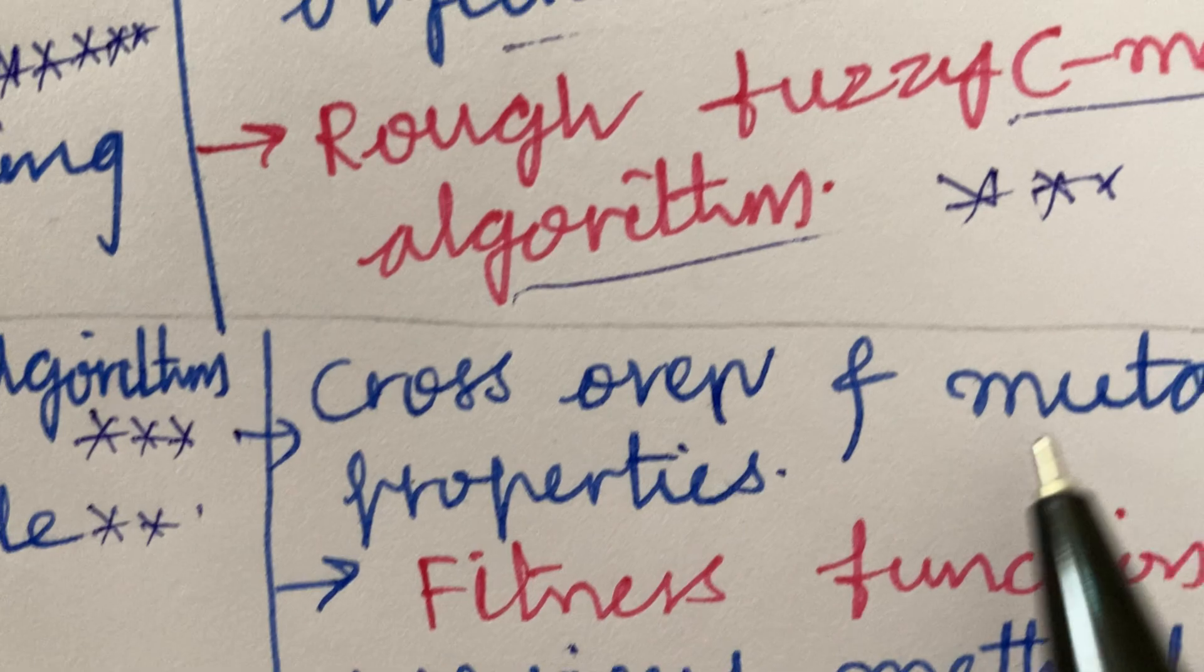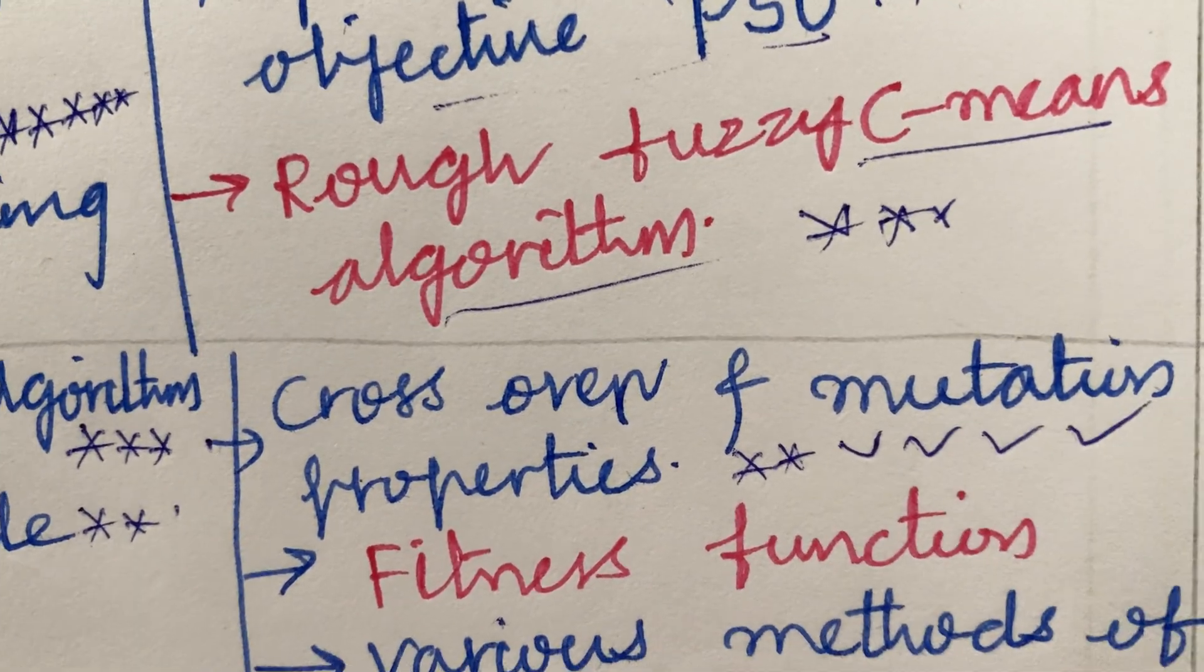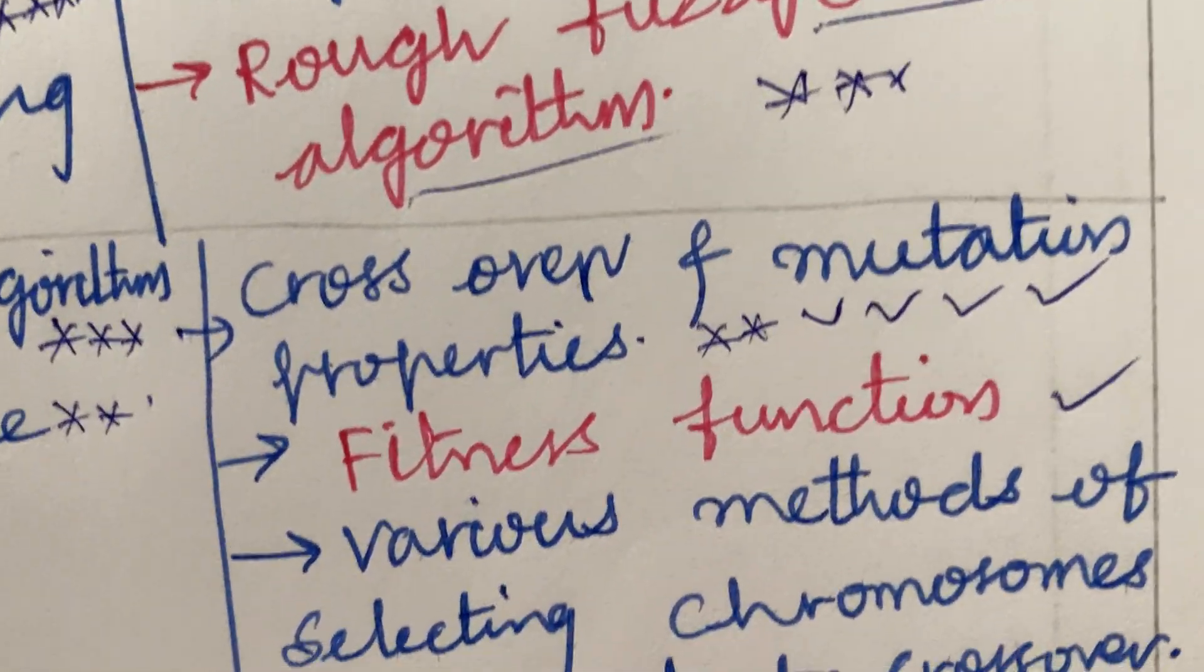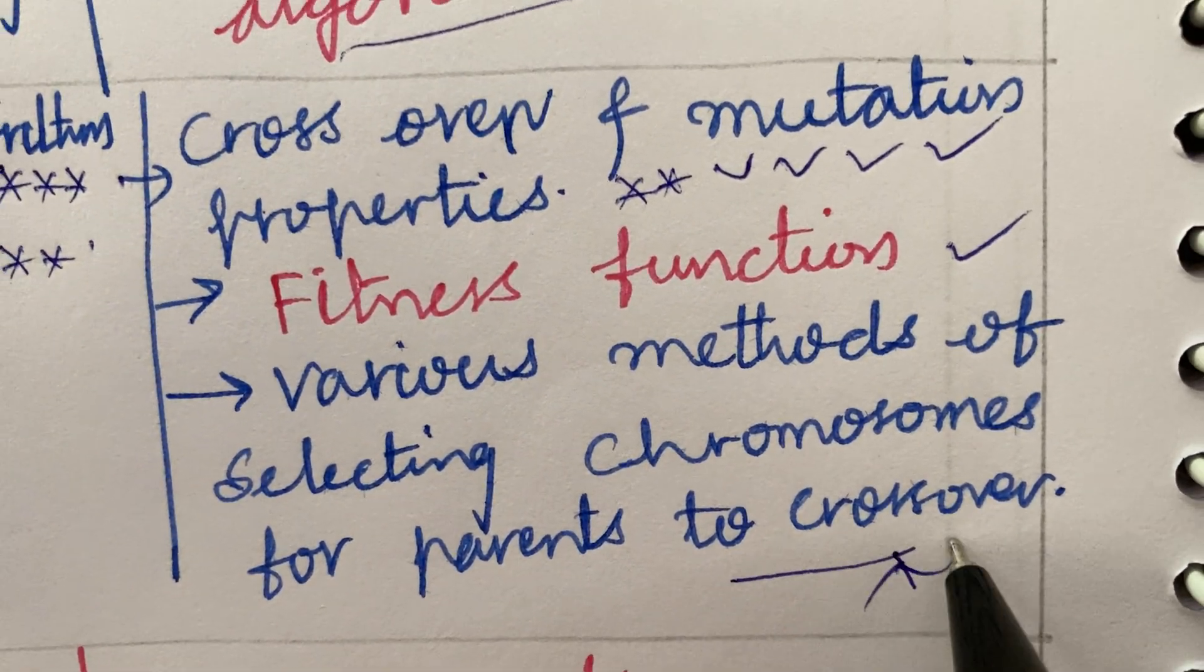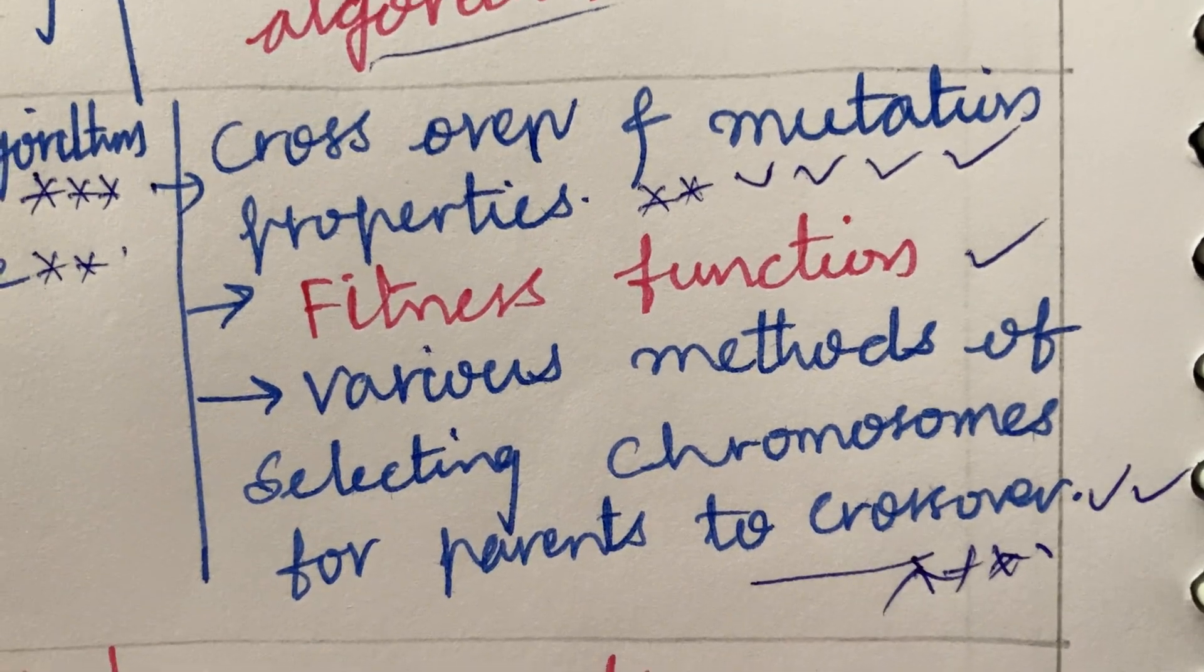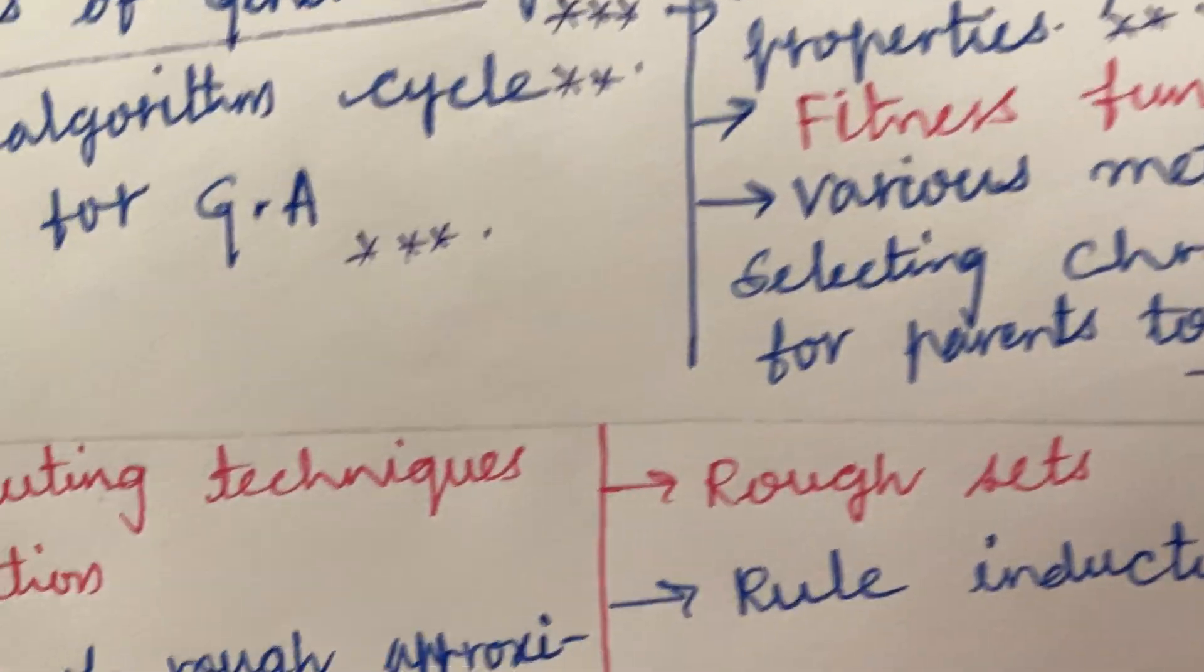The crossover and mutation and the properties of it is said to be a 5 mark question. The fitness function and various methods for selecting chromosomes for parents to crossover is said to be a topmost and direct 10 mark question in the question paper this time.